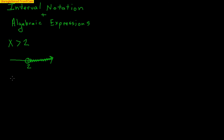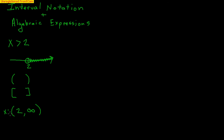Interval notation uses intervals, and intervals use parentheses and also brackets. For this particular inequality, the interval notation would be starting at 2, comma, going all the way to infinity. So 2 towards infinity represents all numbers greater than 2 — x can be any number from 2 towards infinity. A bracket means you can equal 2, which in this case we can't. So a parenthesis implies you cannot equal 2 — it's just everything after 2.